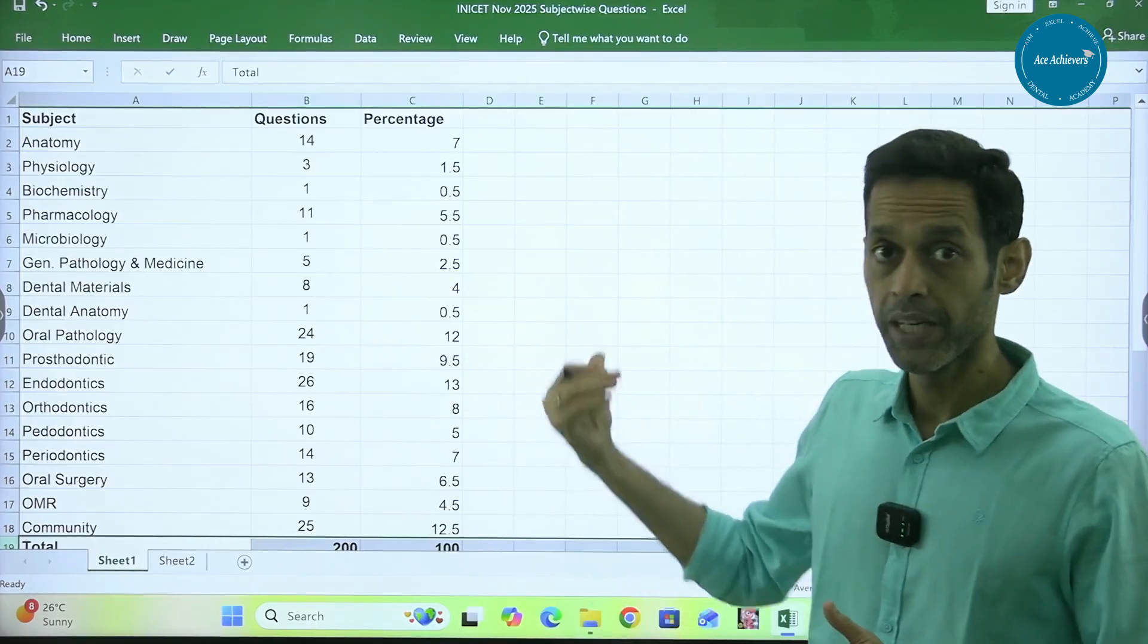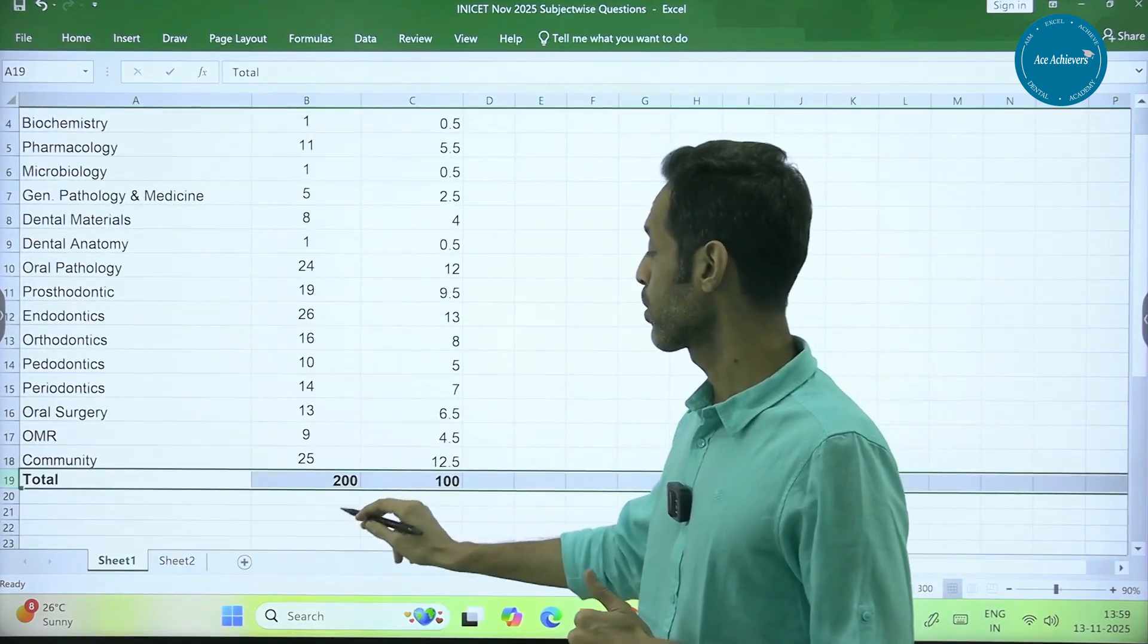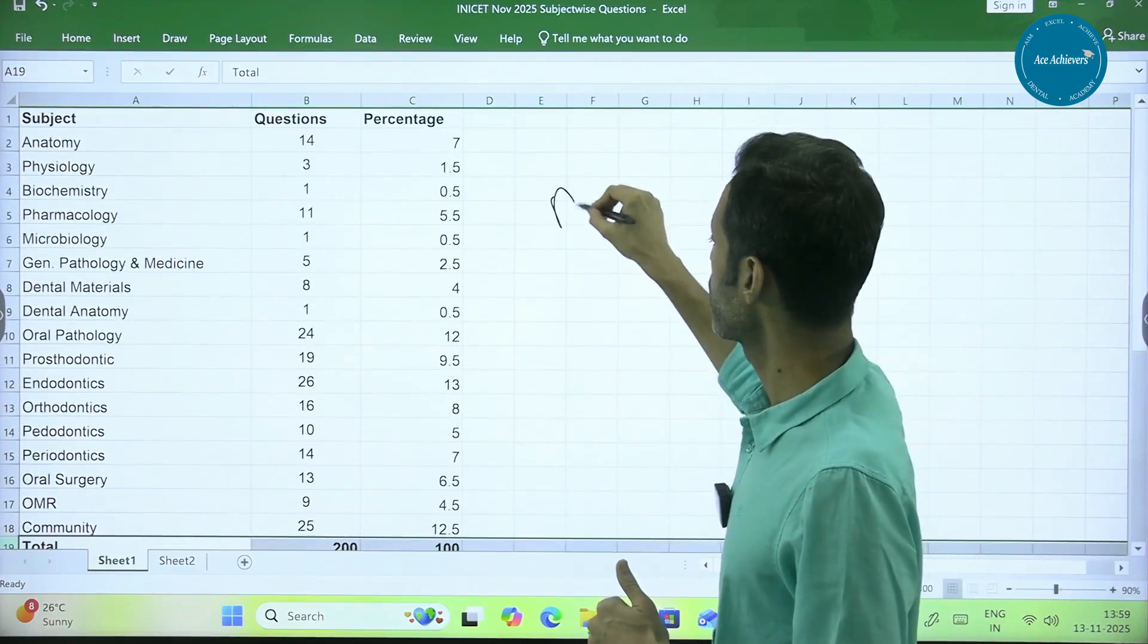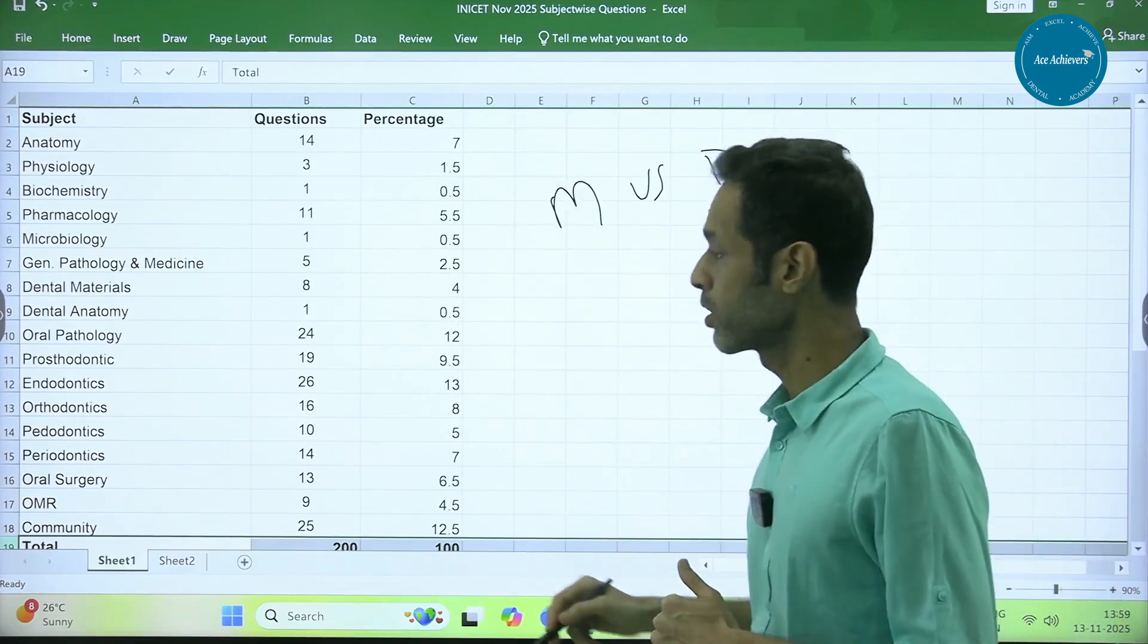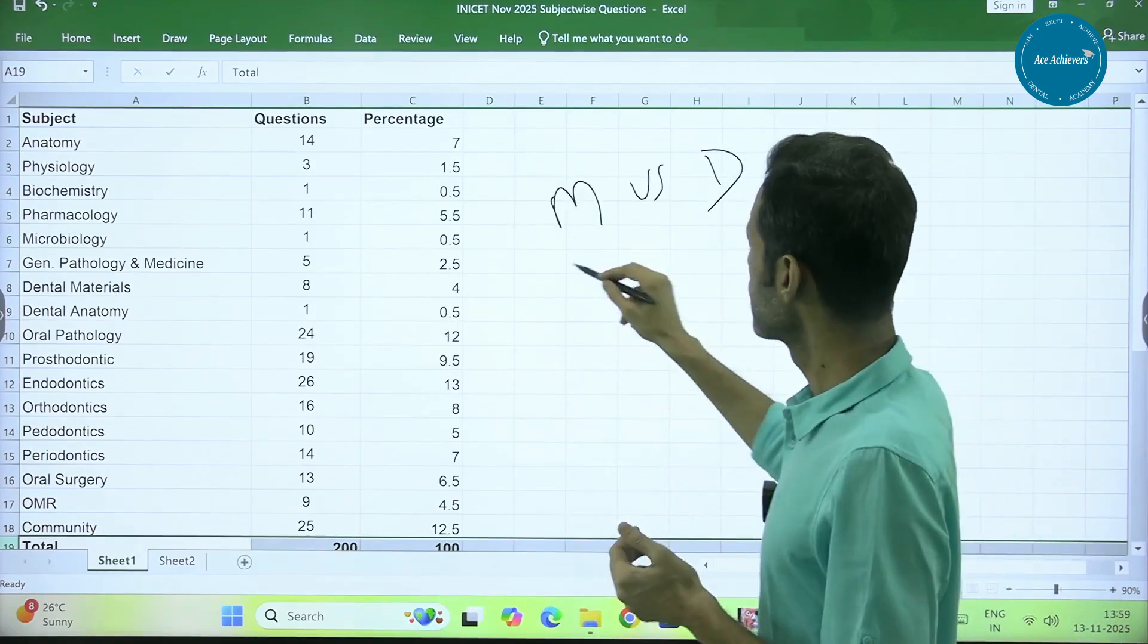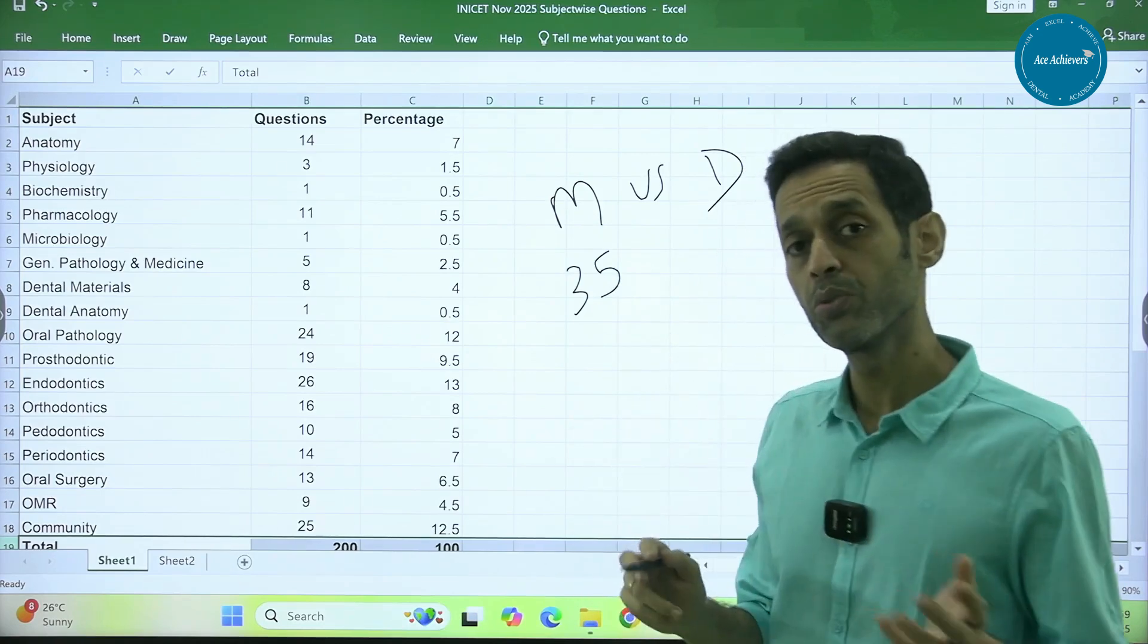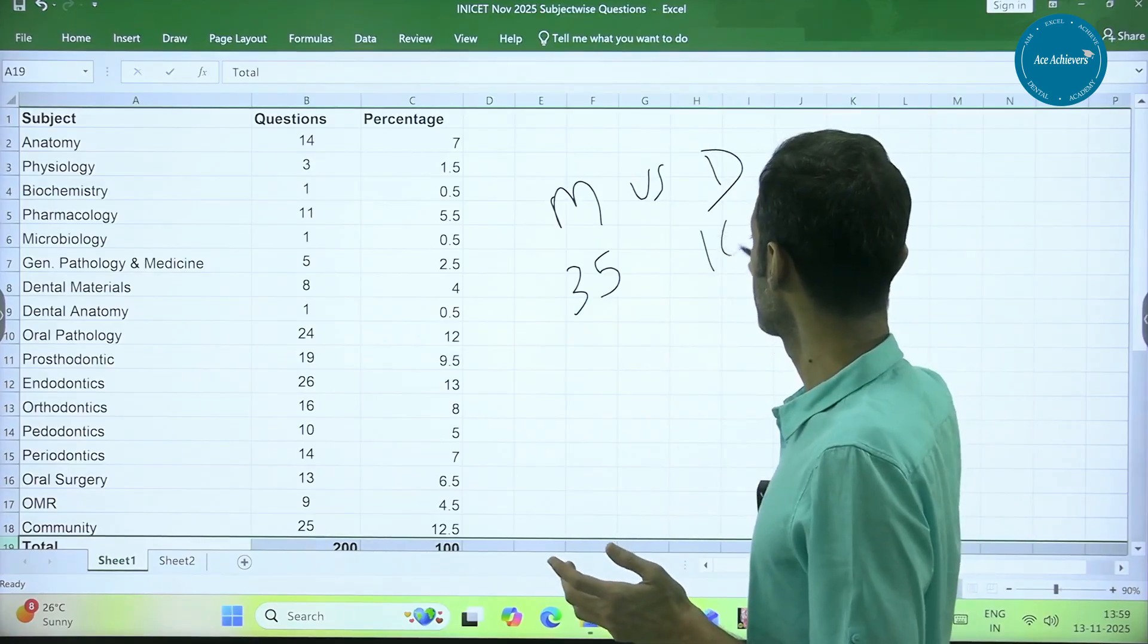If you look at the table behind me, this is the subject wise distribution. We have a collection of 200 out of 200 questions collected and if we see the subject wise distribution, first we talk about the medical versus dental. If you calculate, add all the medical subjects, you are going to find the questions were around 35 or so. Remaining out of the 200 were dental questions. So you get around 165 dental.